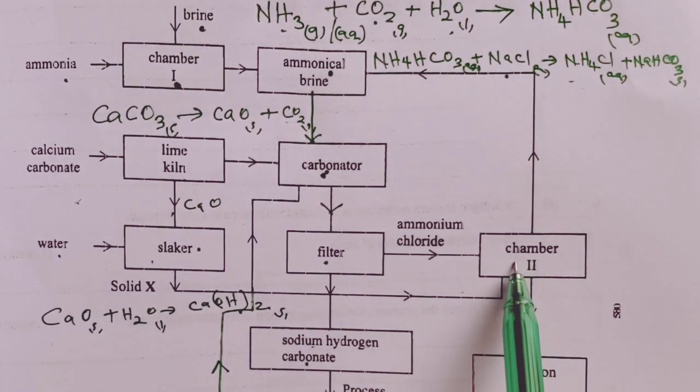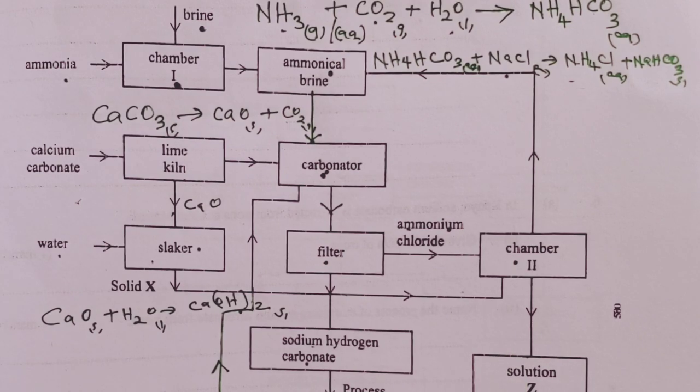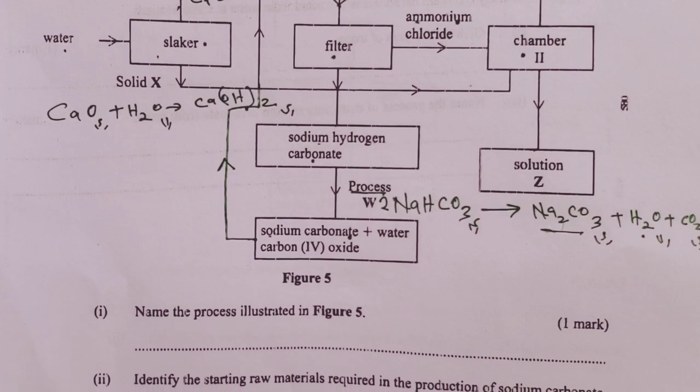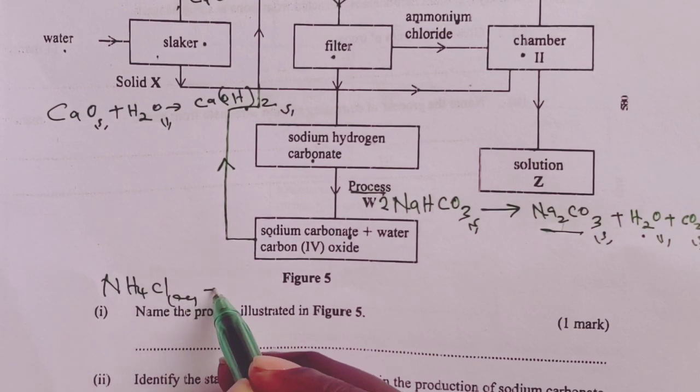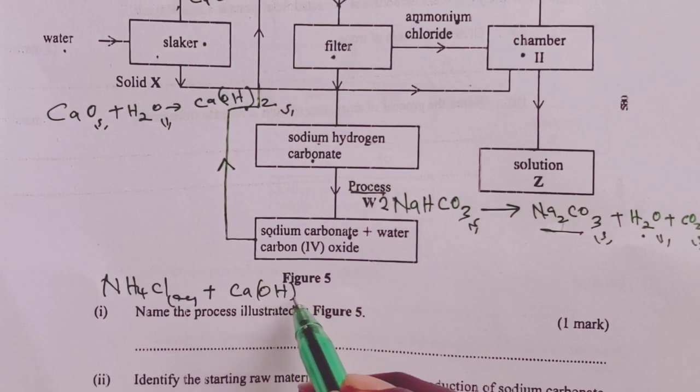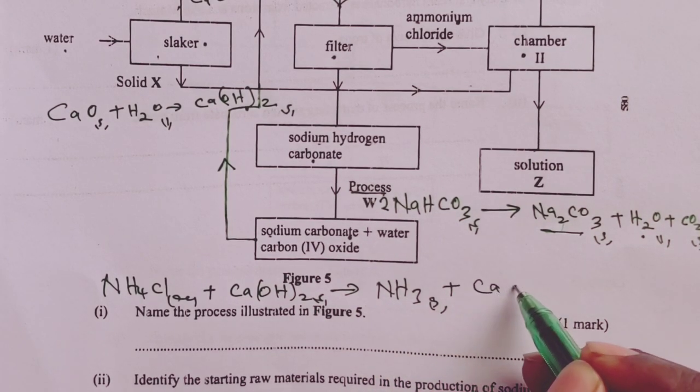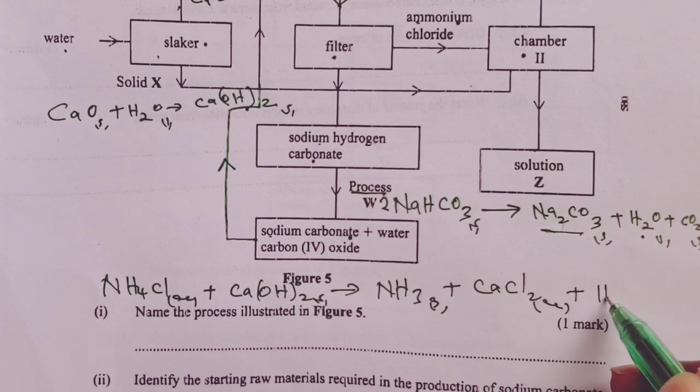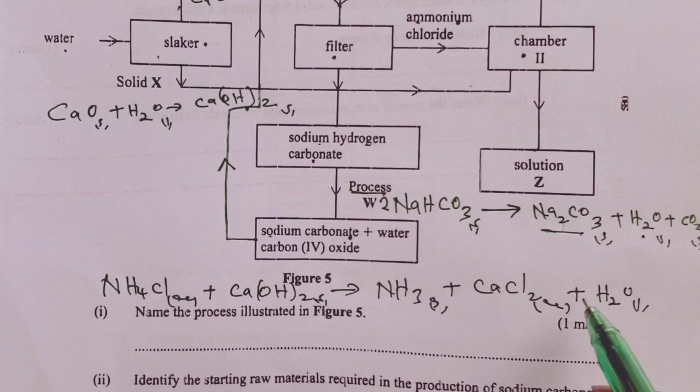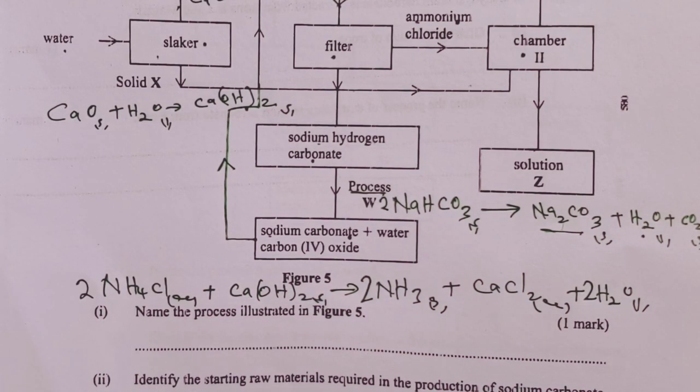Where it meets the ammonium chloride which was pending. When the two react, we form three substances via this equation. Ammonium chloride reacting with calcium hydroxide solid, we form ammonia, we form calcium chloride, and we form water. Of course, we form ammonia, and a two on ammonia, and a two on ammonium chloride.